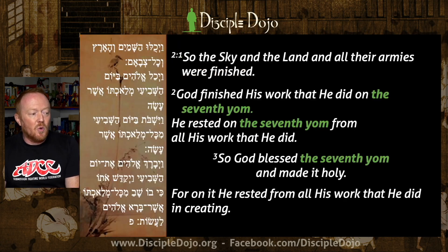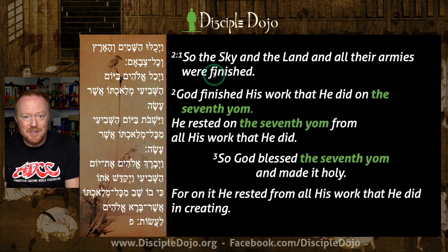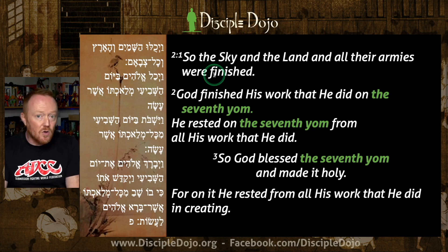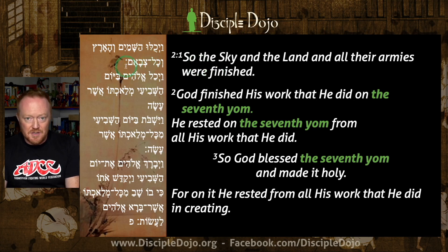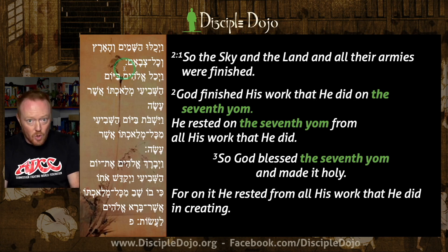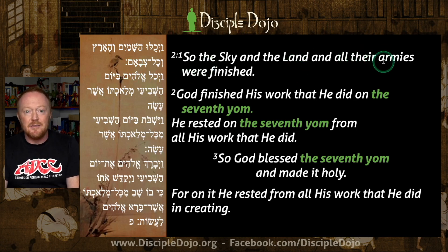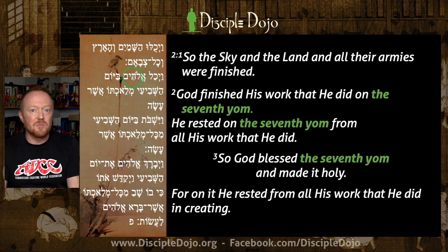Chapter two, verse one: 'The sky and the land' — or the heavens and the earth — 'and all their armies were finished.' Older translations say 'all the hosts' or 'in all their array.' But this is the word for armies. Yahweh is the Lord of armies, the Lord of heavenly hosts. So this is referring to the animals, plants, fish, birds, people — all of it as their armies, their hosts, their regiments. It is the word for armies.